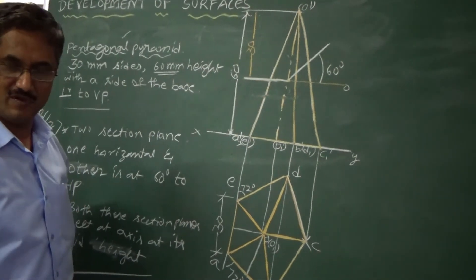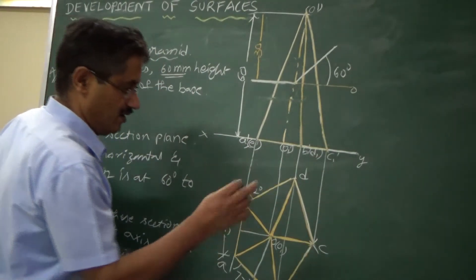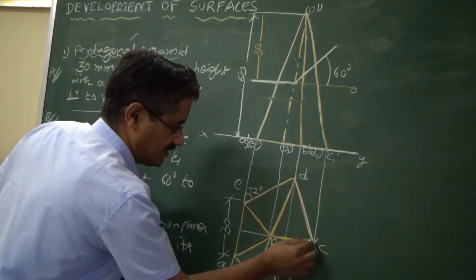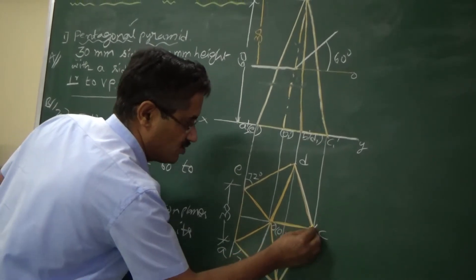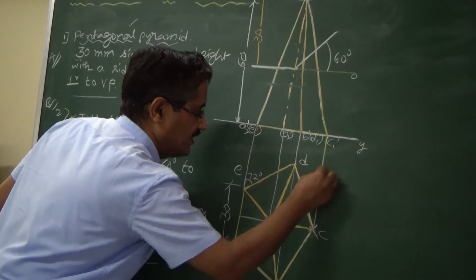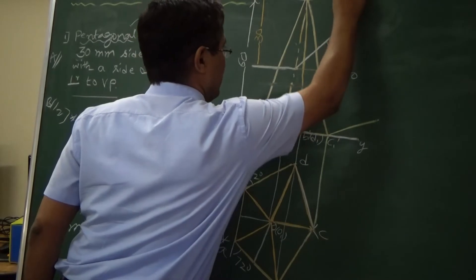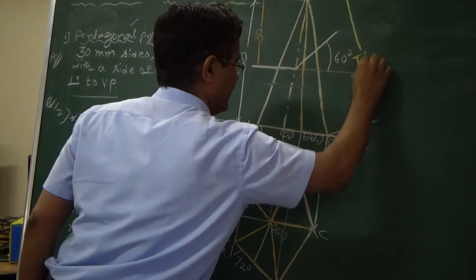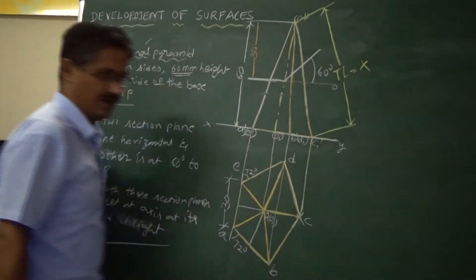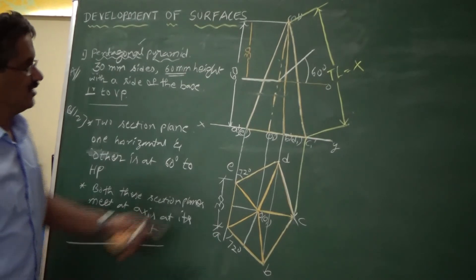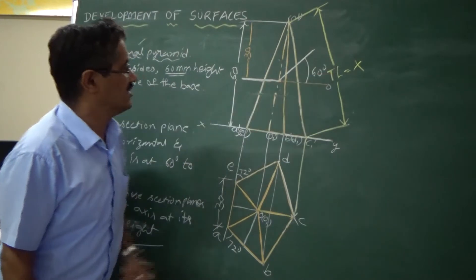Once you have placed the two section planes, give numbers to the intersection points and identify the true length line. Check these lines — one of the lines OC is already parallel to the XY line, so it is already in true length. This line becomes your true length line, which is very important. Identify and measure the true length line distance.